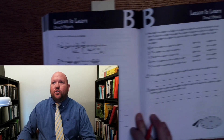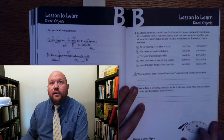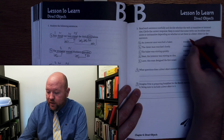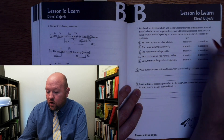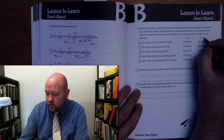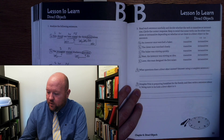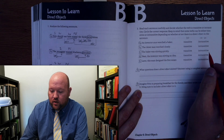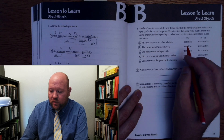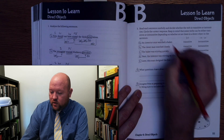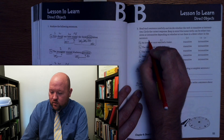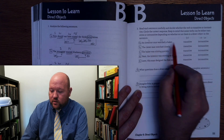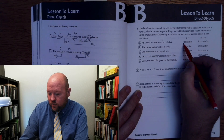Now let's look at page 111. Here we're trying to identify whether or not a verb is transitive — meaning it has a direct object — or intransitive, meaning no direct object. 'An inventor once watched a baker.' What is the verb? The verb is 'watched.' Who did the watching? The inventor. Did the inventor watch somebody? Yes, he watched a baker. Therefore, it is transitive.